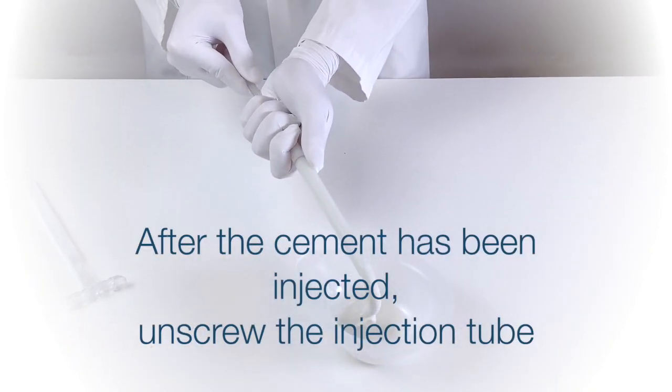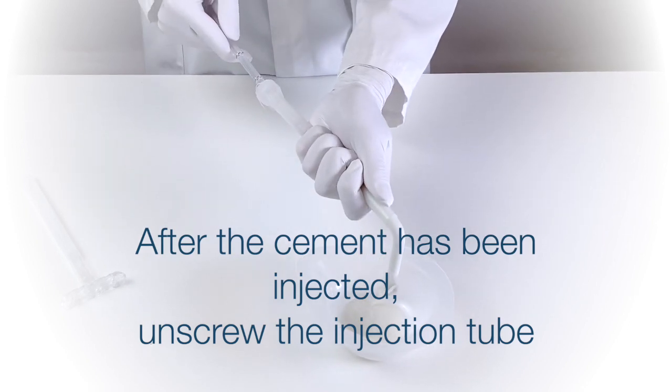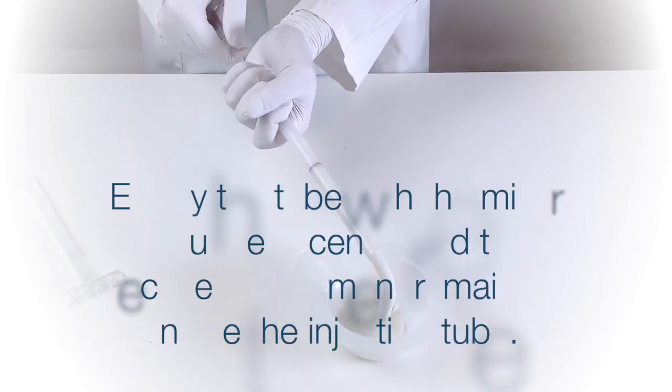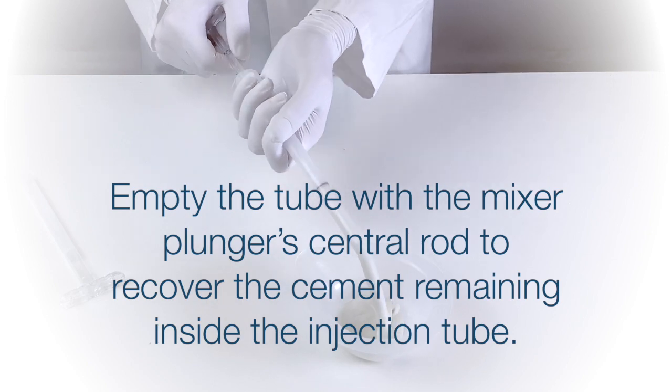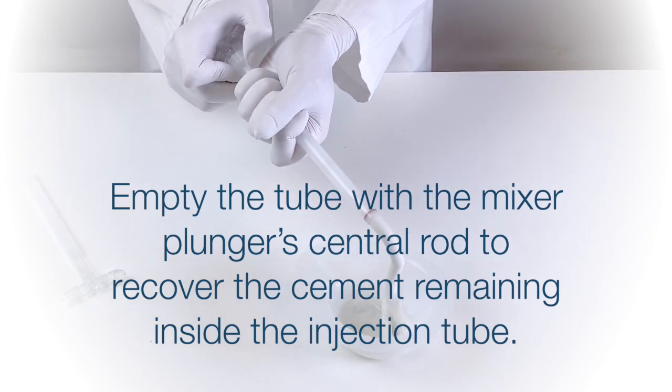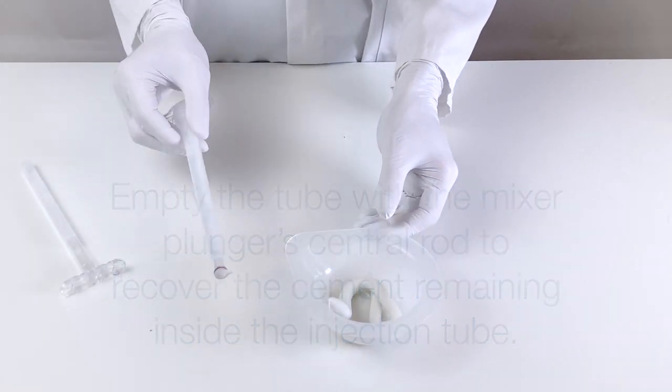After the cement has been injected, unscrew the injection tube. Empty the tube with the mixer plunger's central rod to recover the cement remaining inside the injection tube.